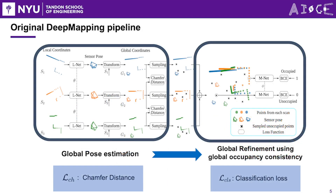The original DeepMapping pipeline comprises two components: the Global Pose Estimation Network (Lnet) and the Global Pose Refinement Network (Mnet). Lnet is responsible for performing rough estimation of global poses, utilizing multi-layer perceptrons to estimate the robot's position and orientation in the global coordinate system. Mnet plays a critical role in refining these rough estimated global poses.